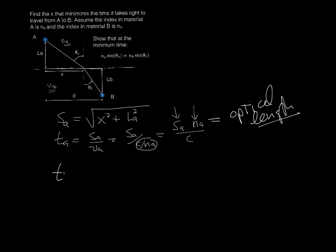Of course, you can make the same argument for t_b. That's going to be s_b over v_b, which of course, is going to turn out to be s_b n_b over c.